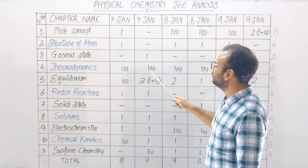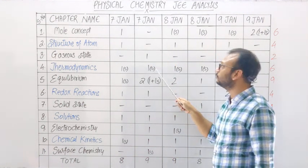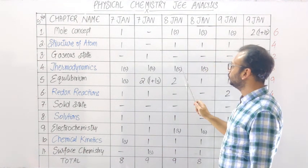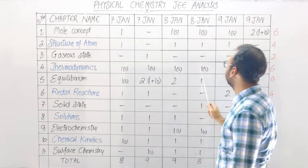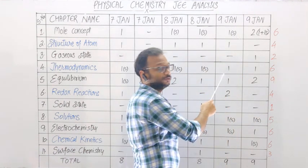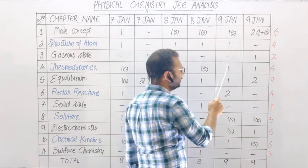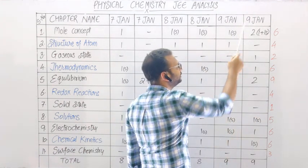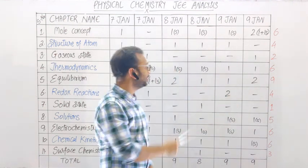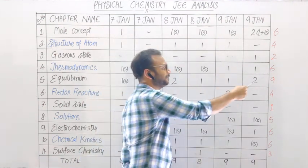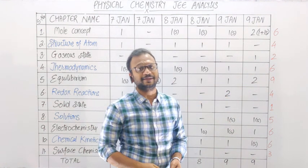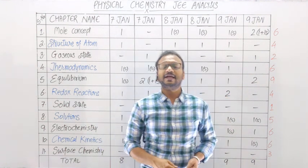On 8th January morning and evening — 2 questions; one 4-option objective question and one subjective. 9th January morning shift: multiple options correct type; 9th January evening shift: 1 question. Total number of questions, guys, if you can see — 6 questions from this section.